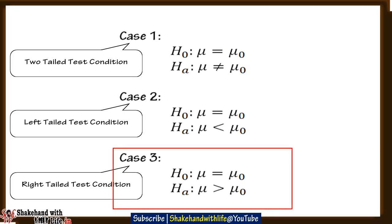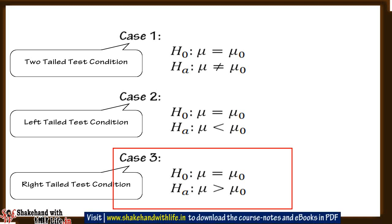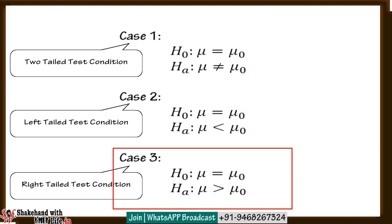Now let's take case three. Here the null hypothesis is H naught: mu equal to mu naught, and the alternative hypothesis H-a: mu greater than mu naught. The null hypothesis implies the population mean mu is equal to the hypothetical population mean mu naught, but the alternative hypothesis states that the population mean mu is higher than mu naught. In this type of situation we use the right tail test. A right tail test rejects the null hypothesis if the population mean mu is significantly higher than mu naught. The rejection region is on the right tail of the curve.